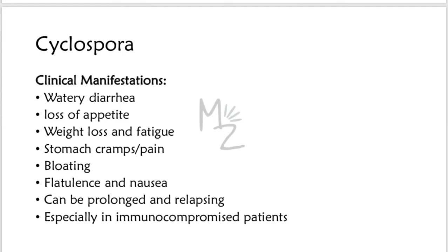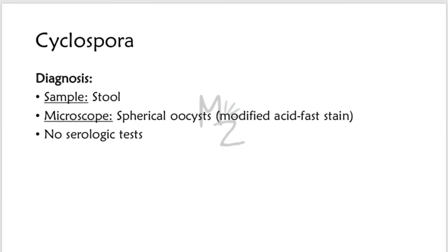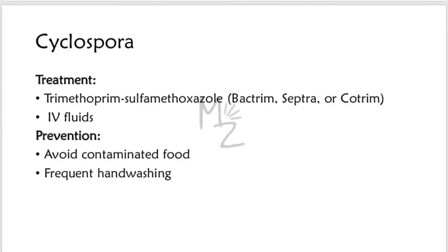Diagnosis: Diagnosis is made by taking a stool sample and viewing it under the microscope. Using a modified acid-fast stain, spherical oocysts are visualized. No serologic tests are done. Treatment of choice is trimethoprim-sulfamethoxazole (Bactrim, Septra, or Co-trimoxazole). IV fluids are also given because the patient is dehydrated due to prolonged diarrhea, with reduced fluids and electrolytes. Prevention: Avoid contaminated food and practice frequent hand washing.